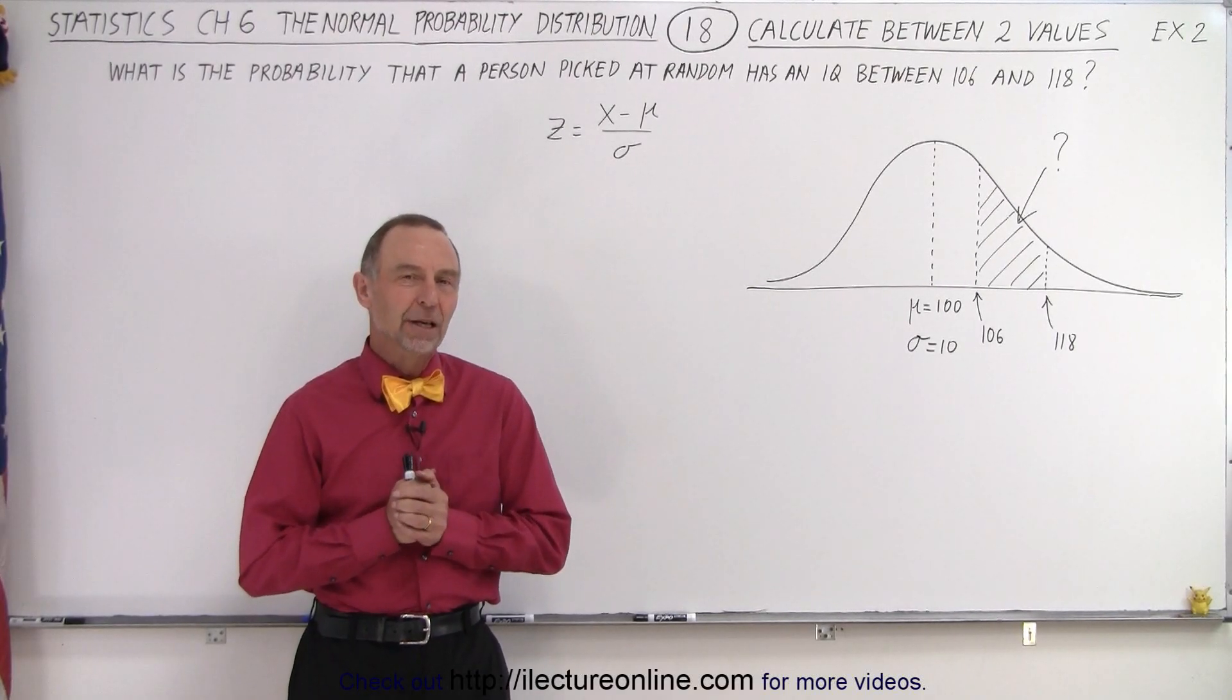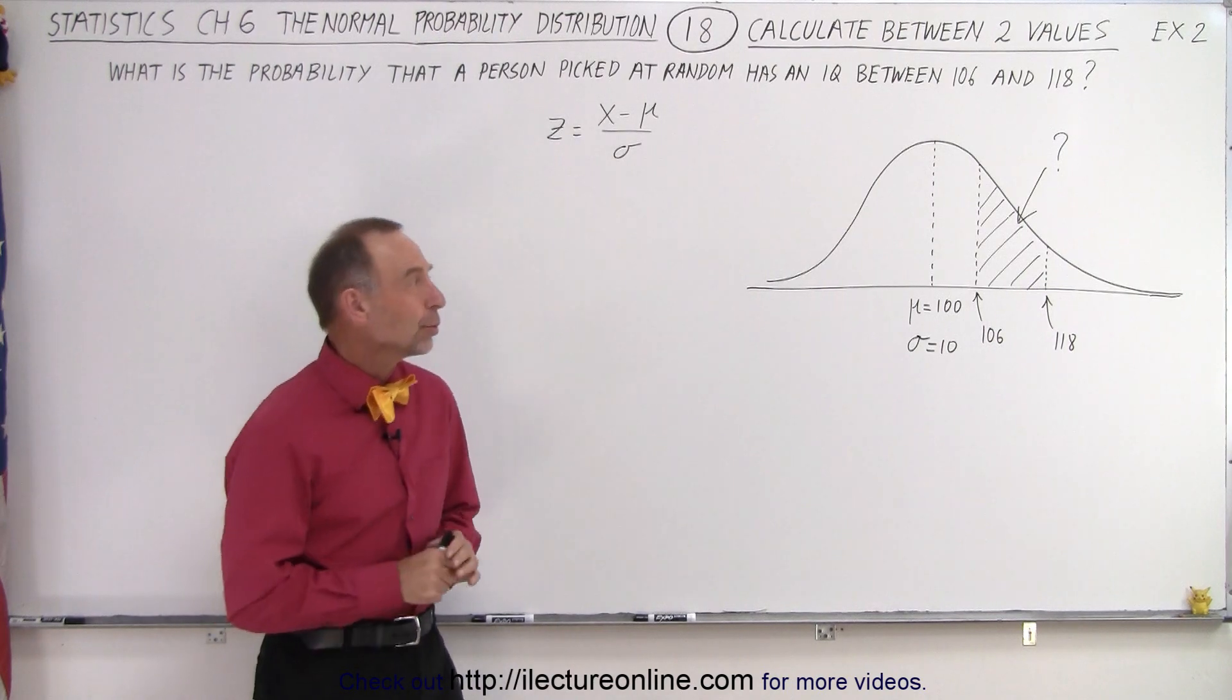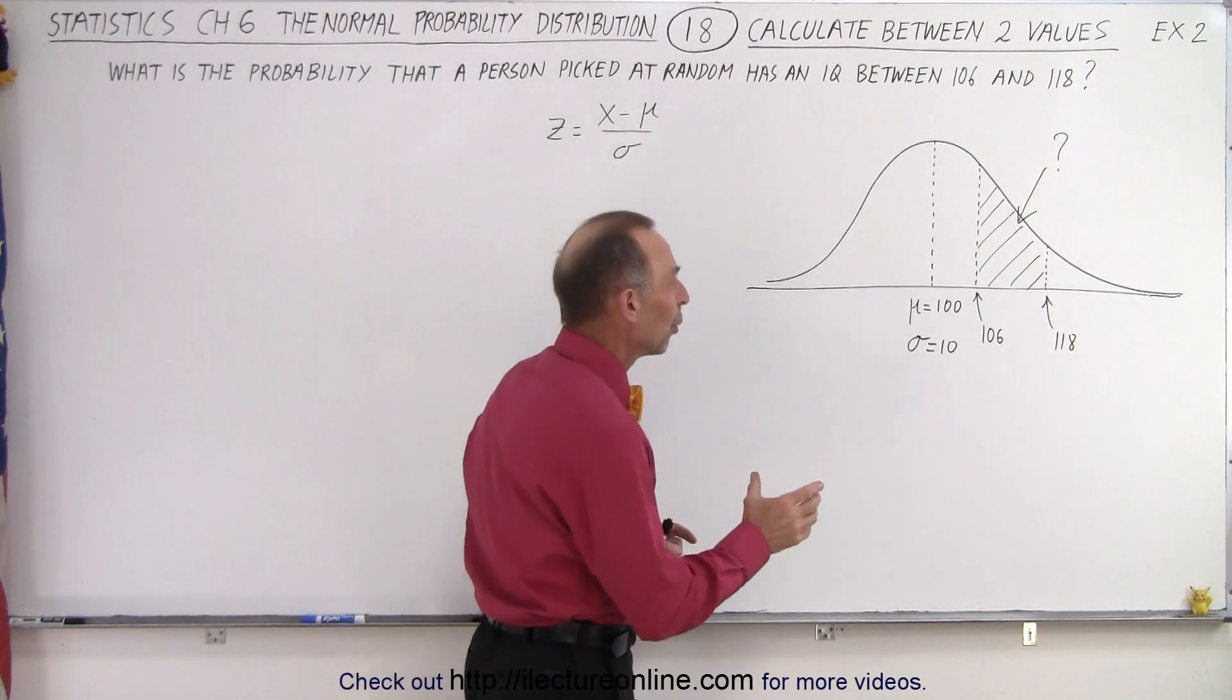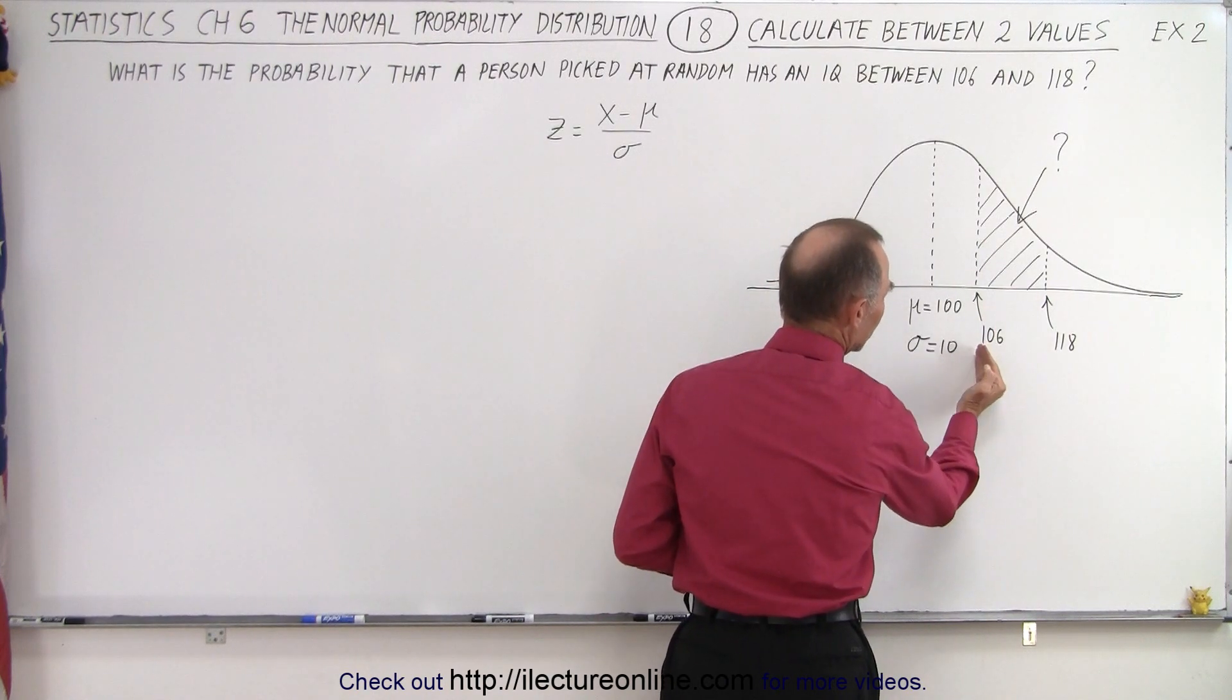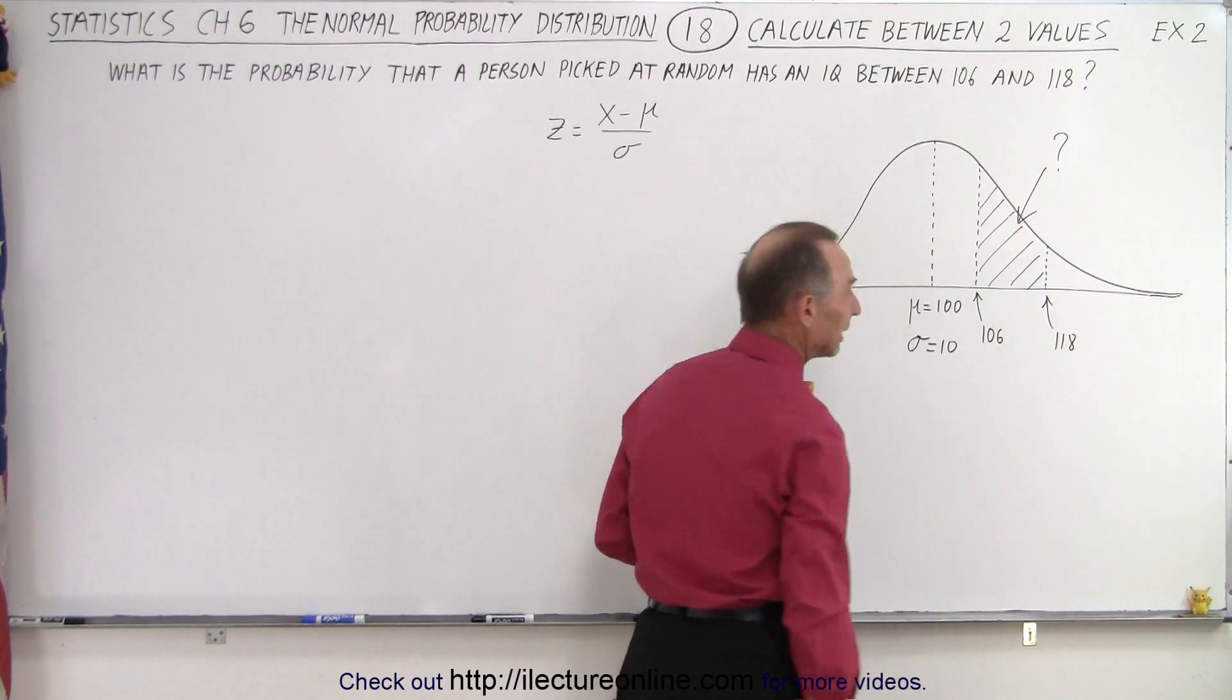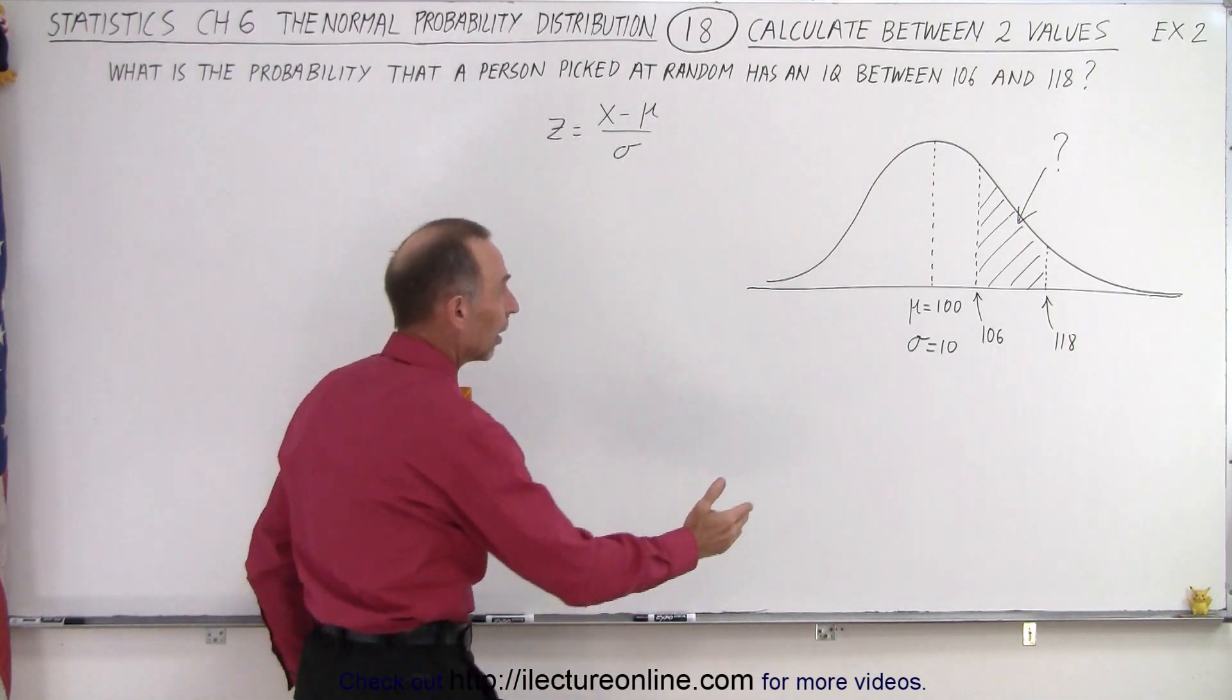Welcome to our lecture online. Just so we prevent some confusion, what do we do when we have to try to figure out what the probability is that a person picked at random will have an IQ between 106 and 118? So now both limits are on the same side of the mean.